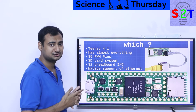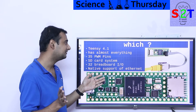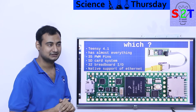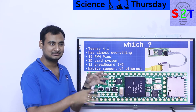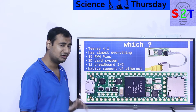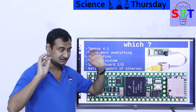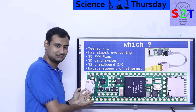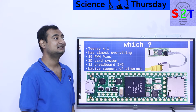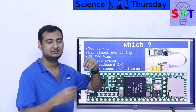Which one should you buy? Teensy 4.1 has just launched and has almost everything you can think of. Teensy took user feedback seriously — they give you a real-time clock, you just need to solder on the battery pads, which is acceptable for products meant to run for a long time. It has 35 pulse width modulation channels — that's a lot of PWM. There's also an SD card slot built in.